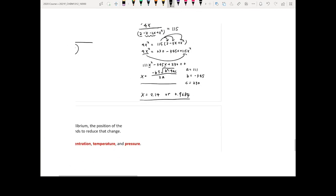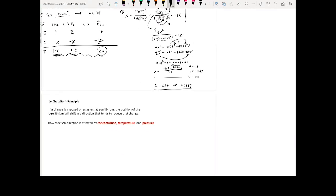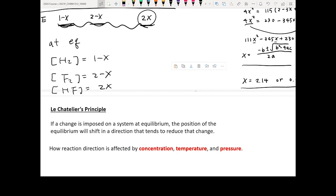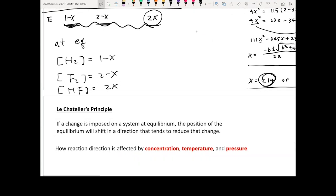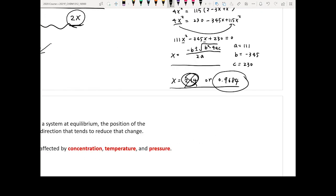So in order to make the proper judgment, you want to see this, this, and this. We know at equilibrium, the concentration of H2 is going to equal to 1 minus x, concentration of your F2 is going to equal to 2 minus x, concentration of your HF is equal to 2x. And we all know that concentration has to be a positive value. So if you look at your x, your x is either 2.14 or 0.9684. So if your concentration is 2.14, that's going to give you a negative H2, which doesn't make any sense. So you know this cannot be your answer. This has to be the correct answer that you can use.